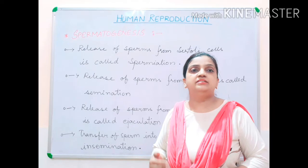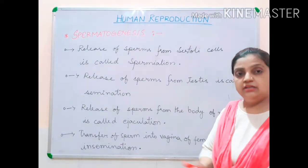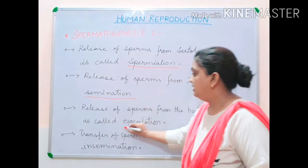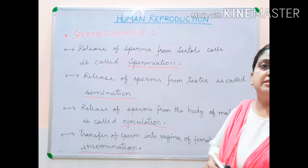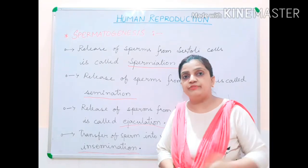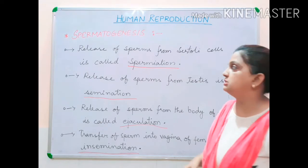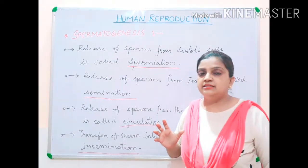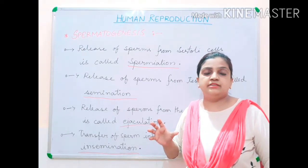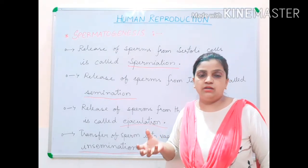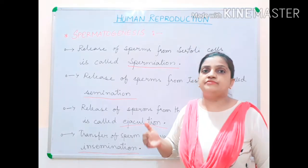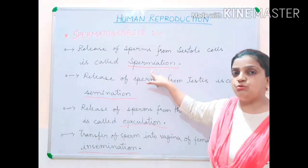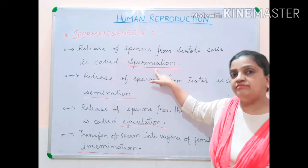Now let us discuss four important terms related to spermatogenesis: spermiation, semination, ejaculation, and insemination. Spermiation is the release of sperms from Sertoli cells. The spermatozoa develop within Sertoli cells, take nutrition from them, and after developing, get released from the Sertoli cells. This process of release of spermatozoa from Sertoli cells is called spermiation.